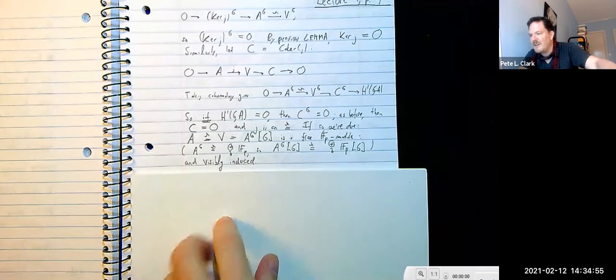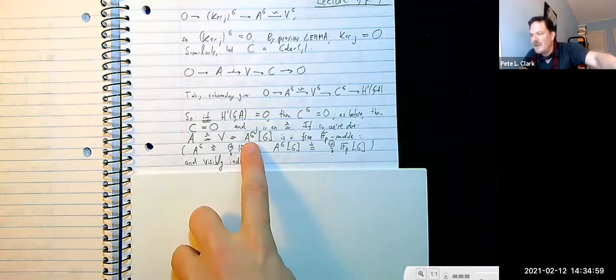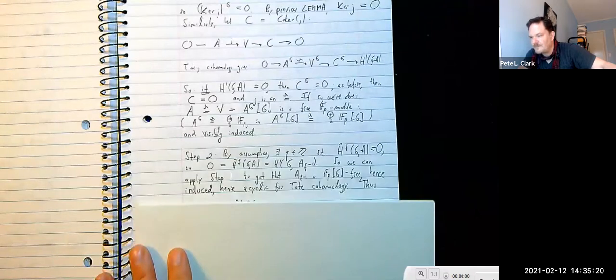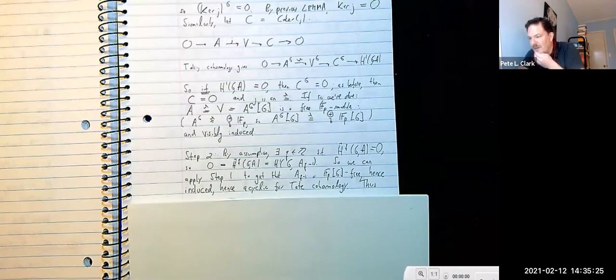By assumption there's some q such that Ĥ^q(G, A) = 0. We also have Ĥ^(q+1)(G, A) = 0 — and here is where we do the dimension shifting.